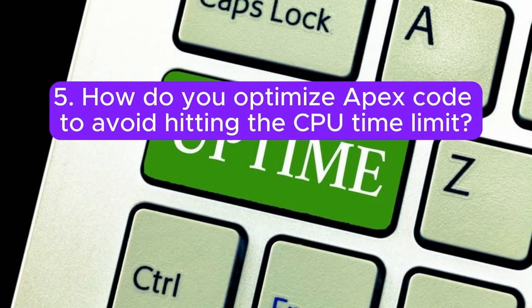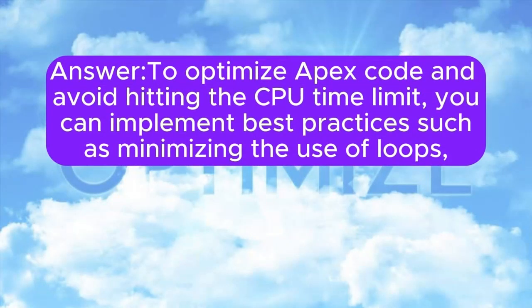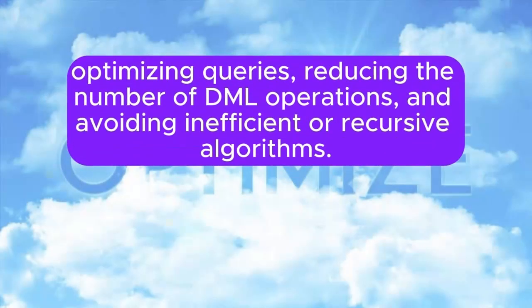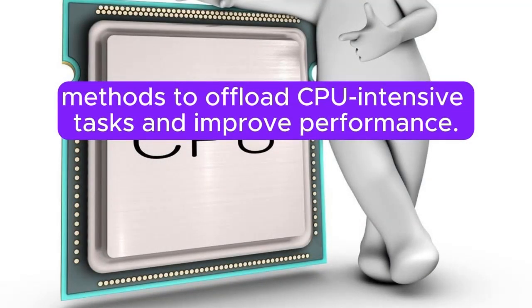Question 5: How do you optimize Apex code to avoid hitting the CPU time limit? Answer: To optimize Apex code and avoid hitting the CPU time limit, you can implement best practices such as minimizing the use of loops, optimizing queries, reducing the number of DML operations, and avoiding inefficient or recursive algorithms. You can also use asynchronous processing techniques such as Batch Apex, Queueable Apex, and future methods to offload CPU-intensive tasks and improve performance.